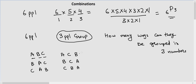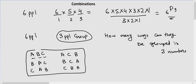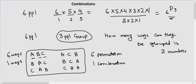So basically, if we have the permutation, we have to remove six of these duplicate ways and count them as one. These six permutation arrangements should be counted as just one combination.